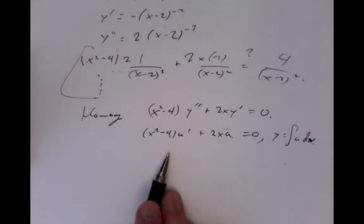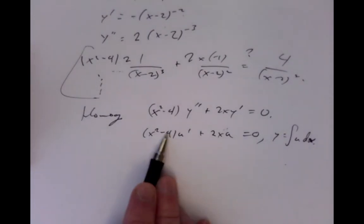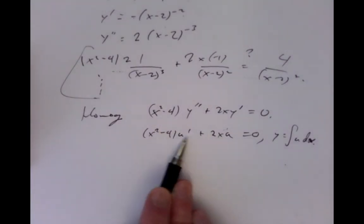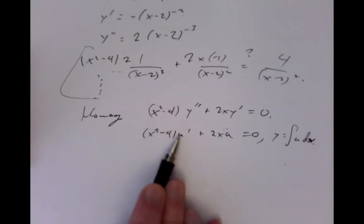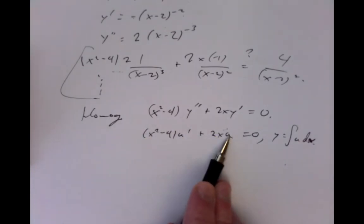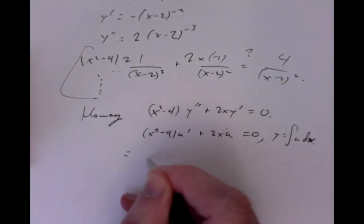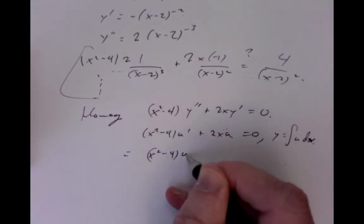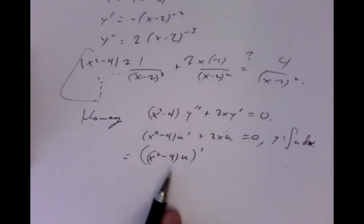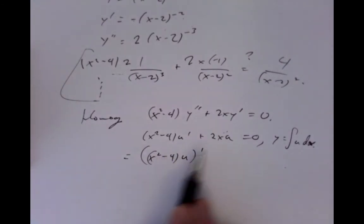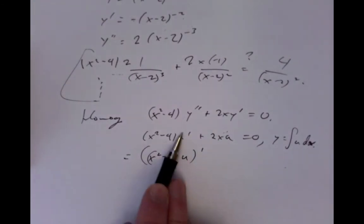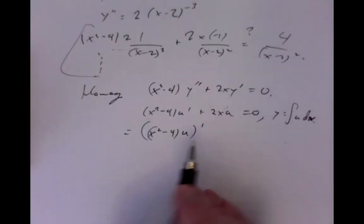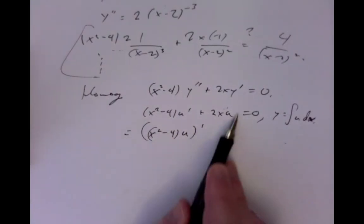You could use the method of integrating factors, or you might just notice that when you take the derivative of x squared you get 2x, and the derivative of u is u prime. So the derivative of (x squared minus 4) times u — using the product rule — gives (x squared minus 4) u prime plus 2xu, which is exactly what we have. So you can see right away that this is just a product rule, making it possible to solve the problem without even having to worry about finding integrating factors.